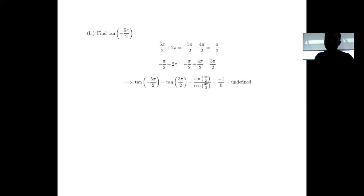This means that evaluating tangent at negative 5π over 2 is the same as evaluating tangent at 3π over 2, which is one of our very familiar unit circle angles. It corresponds to the point 0, negative 1 on the unit circle.